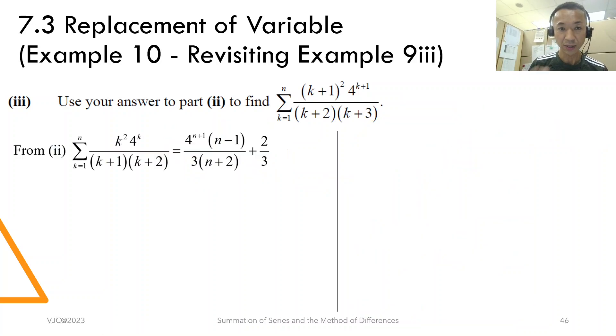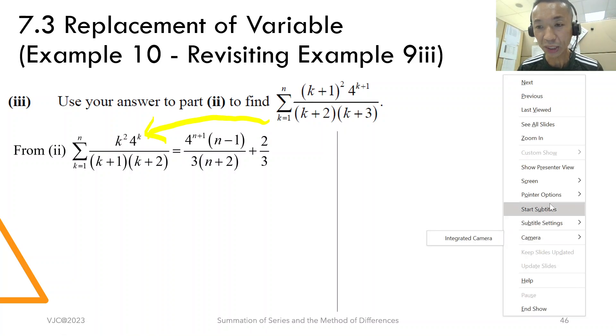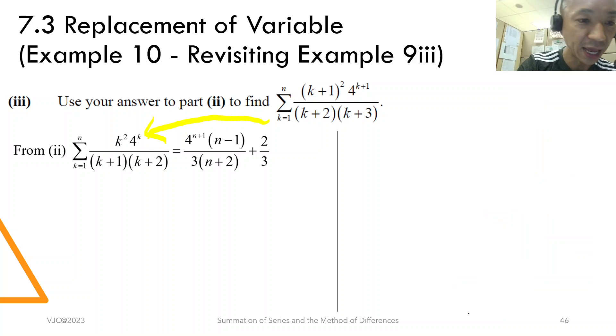So, let us see again this one. From part 2, it is like this. We are supposed to get to this point. And let us think, what is a possible replacing, replacement. Replace k with what?